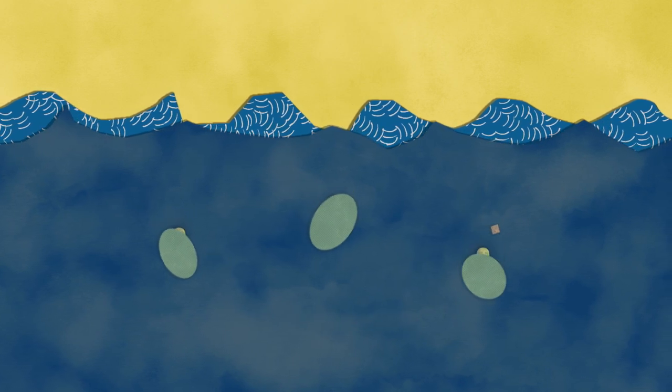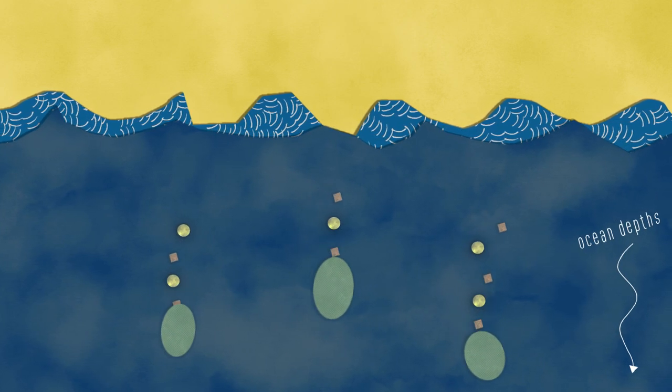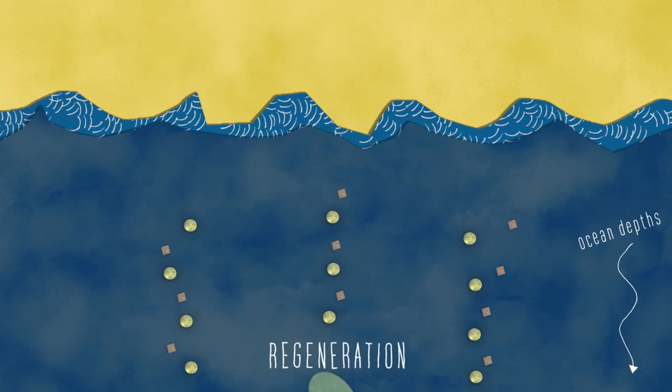Phytoplankton take up trace metals and macronutrients in the euphotic zone and release them after they die as they decay, through a process known as regeneration.